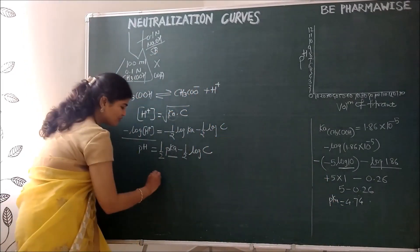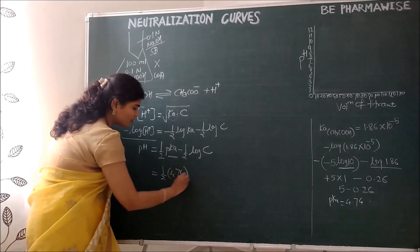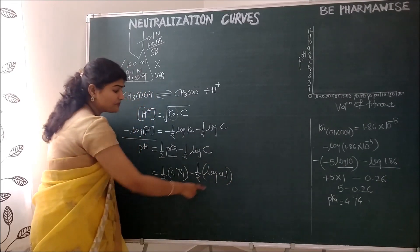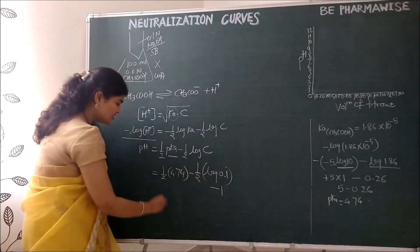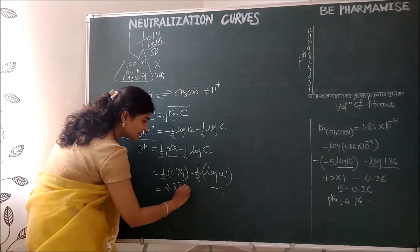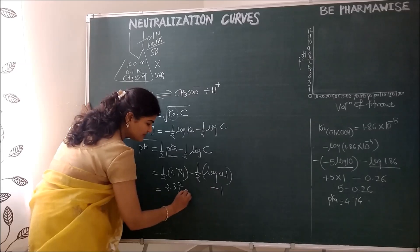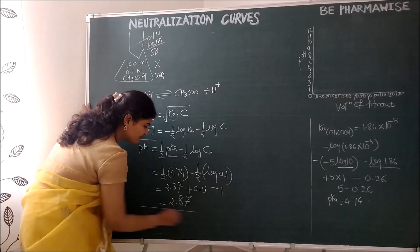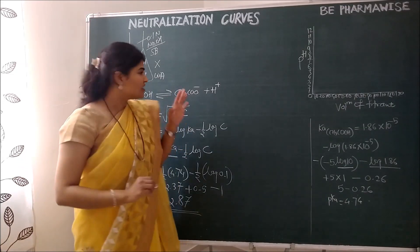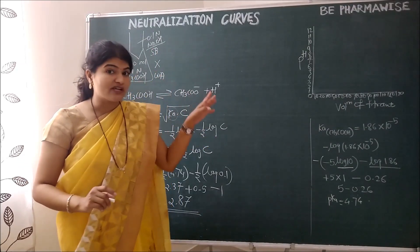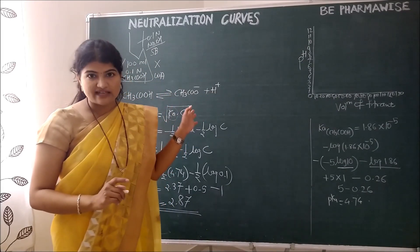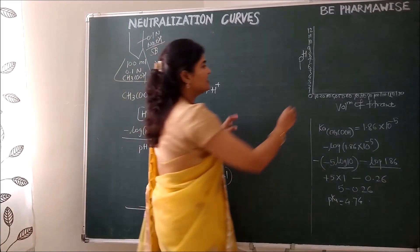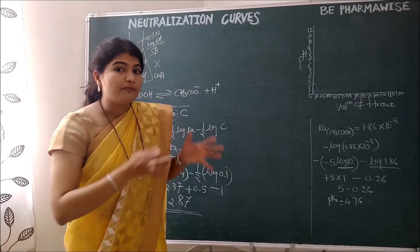So we have the pKA value of acetic acid as 4.74 and the pH before the titration begins is 2.87. This is the pH before the titration starts for a weak acid strong base system. If you remember the curve of strong acid strong base, it started from 0 because there it was a strong acid with 1 normal concentration. But here the concentration is 0.1 and the graph will start from 2.87.